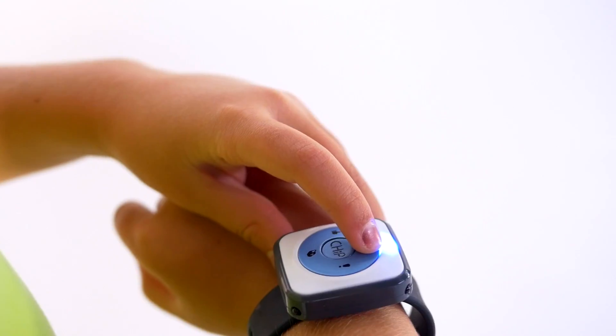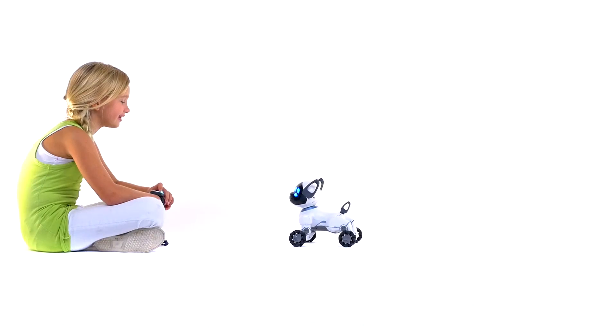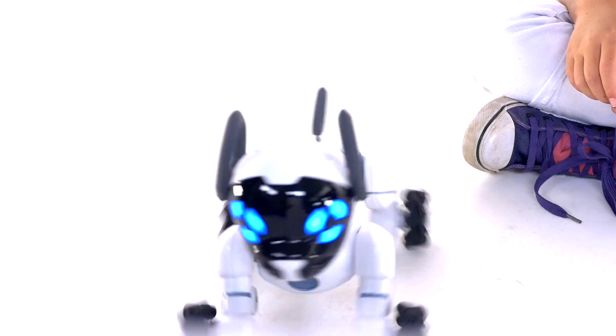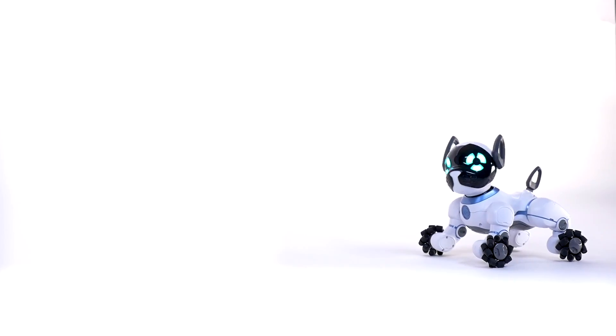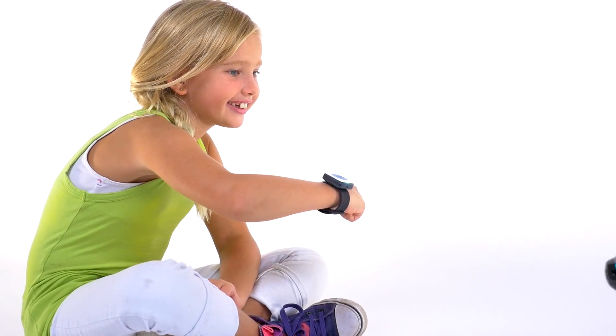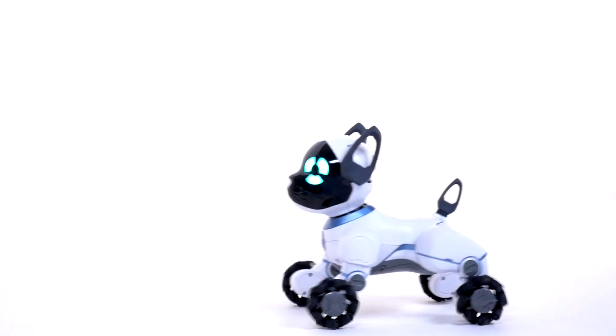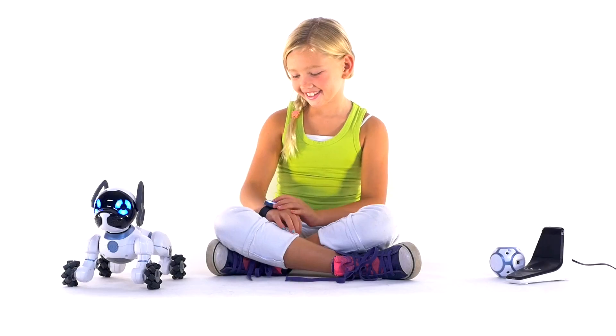If you can't find Chip, hit the location pin at the top of the band and he'll be right over. Chip can track you from up to 5 meters away, but if he seems unresponsive, try pointing the IR sensor at the top of the band directly at Chip's eyes.